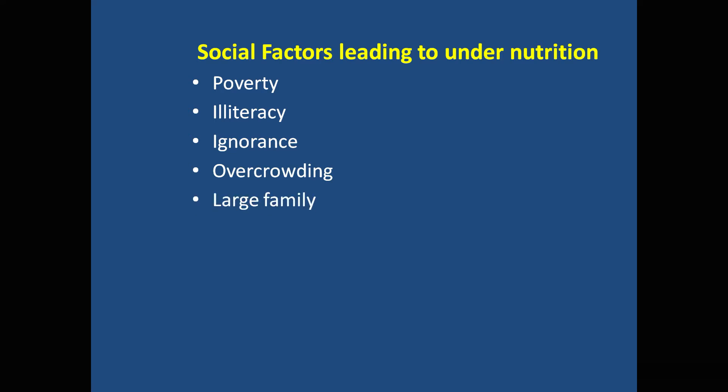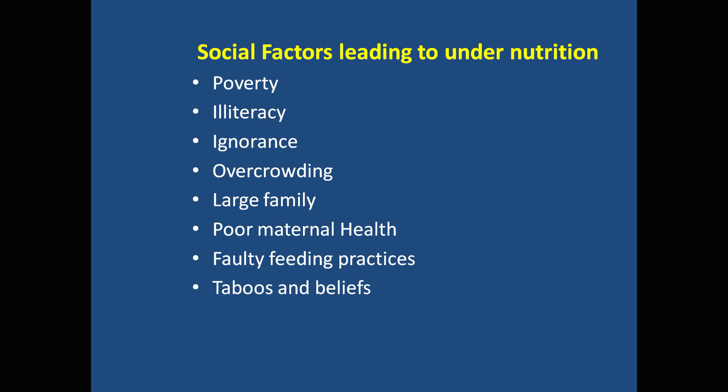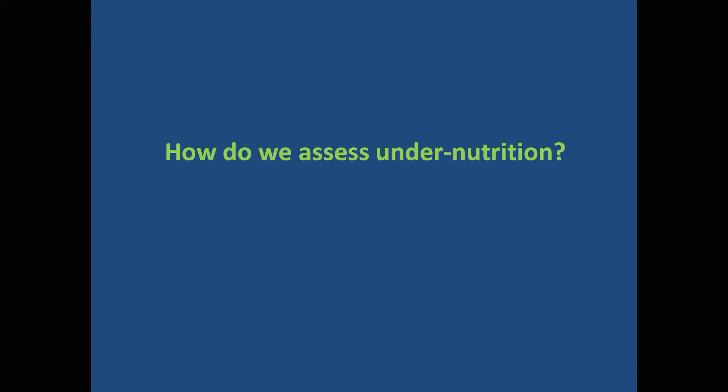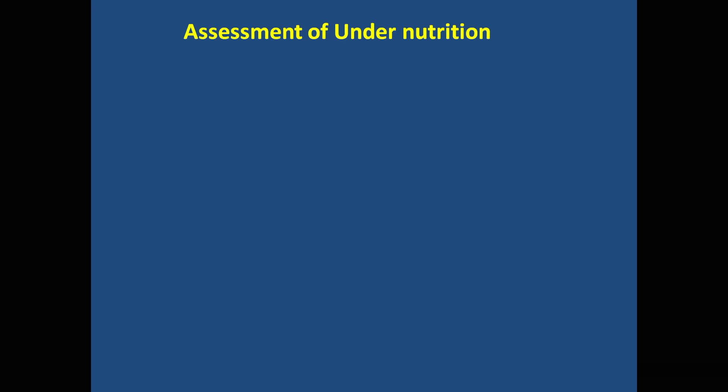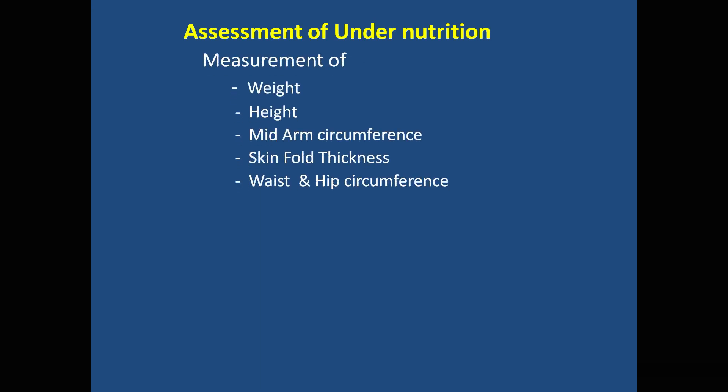Regarding social factors: poverty, illiteracy, and ignorance about what and how to feed children are key causes. Overcrowding leads to infections and other problems. Large families, poor maternal health, faulty feeding practices — such as improper cooking which destroys nutrients — and certain cultural beliefs and taboos about what should not be eaten also contribute significantly to malnutrition.